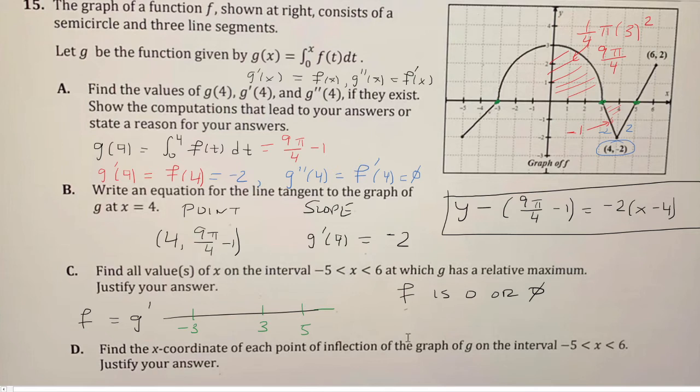To the left of negative 3 here, f is negative. Between negative 3 and 3, f is positive. Between 3 and 5, it's negative. And then after 5, it's positive. So if it's negative, it's decreasing, positive, increasing. And it has to have a relative maximum when the derivative changes from increasing to decreasing. So that occurs over here at x equals 3.